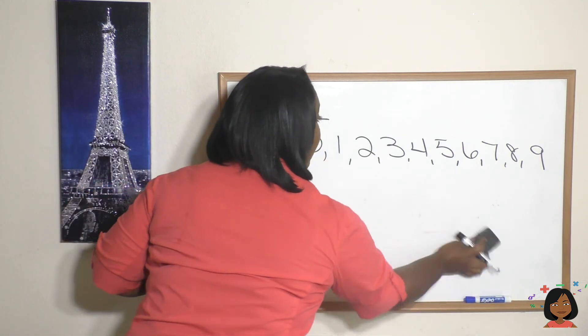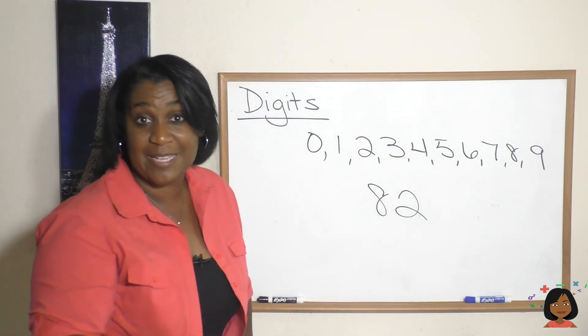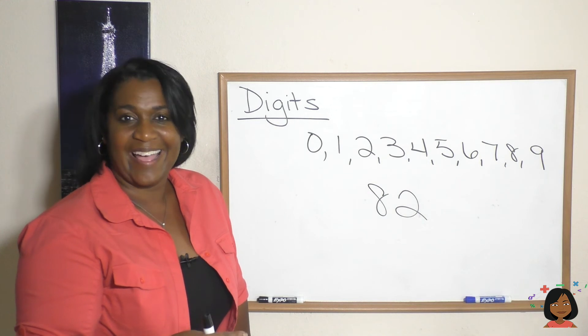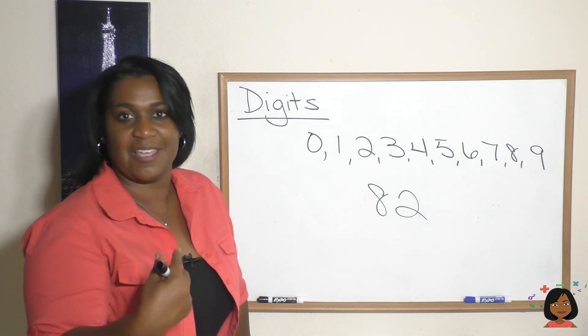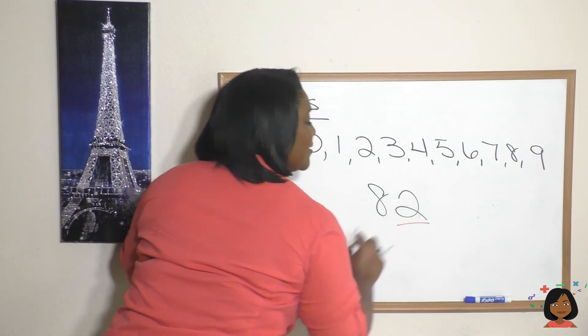Let's try 82. First question: how many digits are in my number? There's two, good. And what is the last digit in my number? The last digit is the number 2.